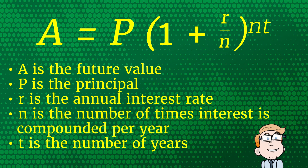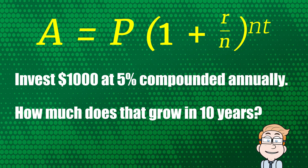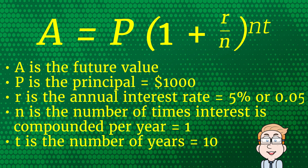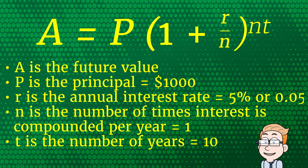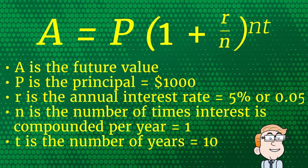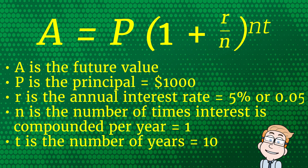Let's look at our example to make this crystal clear. If you invest $1,000 at an annual interest rate of five percent compounded annually, how much would it grow to in 10 years? Plugging into the formula: P equals $1,000; r equals five percent or 0.05; n equals 1 since it's compounded annually; and t equals 10 years.